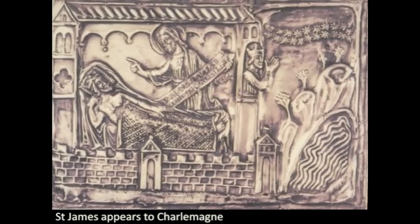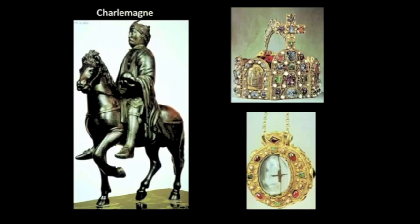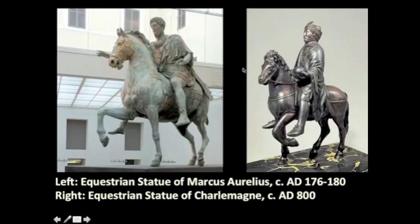This is Charlemagne's vision where Saint James appears to him and tells him to go forth and conquer, and his magnificent coronation by the Pope in Rome. Insofar as Charlemagne identified himself with the Romans, he tried to manifest symbols of his power in a specifically Roman way. We looked briefly at this equestrian statue of Charlemagne — or if not Charlemagne, at least some other Carolingian king. Even the idea of being portrayed riding a horse is a Roman idea.